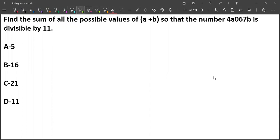We need to find the sum of all possible values of a+b. The number 4a067b is divisible by 11.